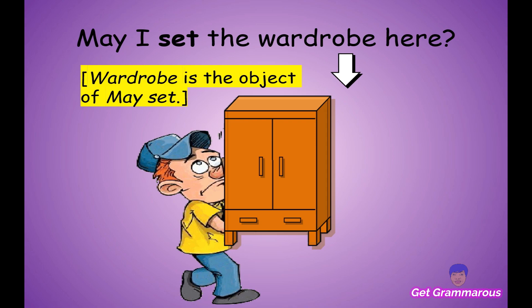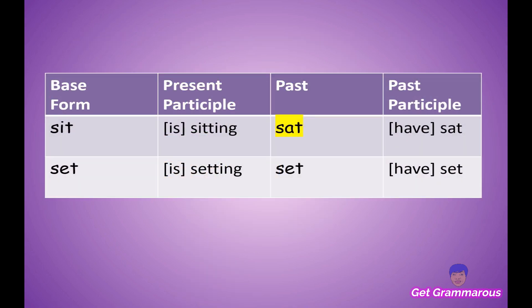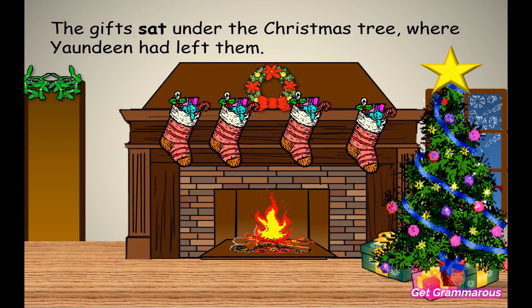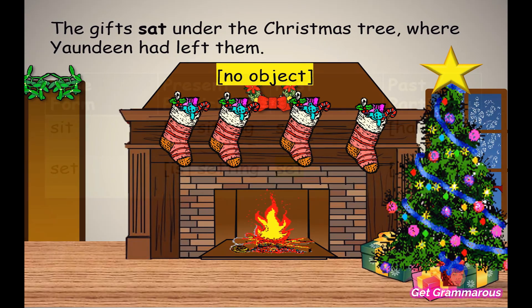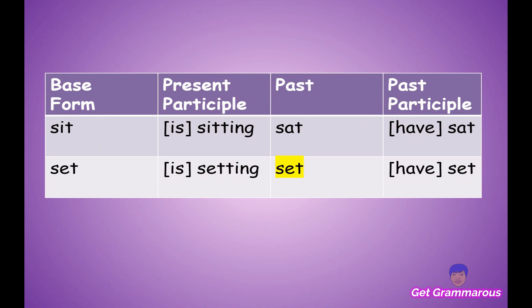Let's look at 'sat,' the past tense of 'sit,' in a sentence: 'The gifts sat under the Christmas tree where Yandine had left them.' This sentence has no object — 'sat' is not done to anything. Now for the past tense of 'set,' which is still 'set' — remember, the form doesn't change.